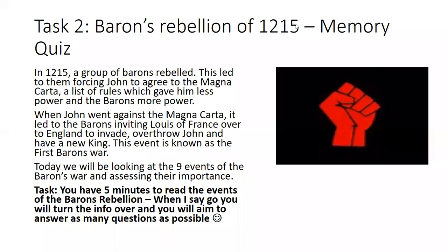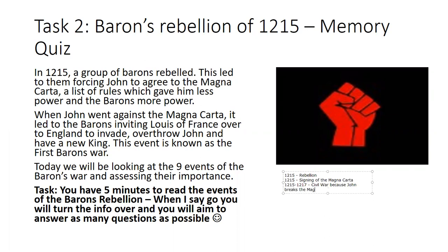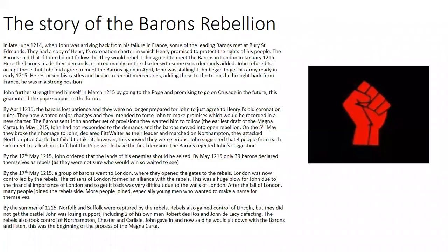It's important to understand that this is broken into sections: in 1215 you have the rebellion, also in 1215 the signing of the Magna Carta, and then from 1215 to 1217 you have a civil war, because John breaks the Magna Carta. People sometimes get the rebellion and the civil war mixed up — they are two totally different events.